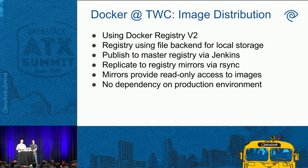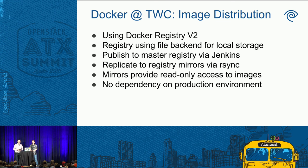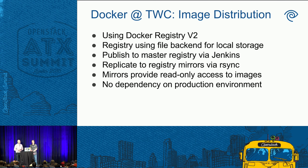One potentially controversial decision: we didn't want any dependency on our production environment being functional in order to pull images. It was initially attractive to back-end our Docker registry into Swift, but we thought about scenarios like deploying a broken Keystone build — would the Docker registry still be able to authenticate to Swift to pull the corrective image? We decided that would be a stressful situation, so we stuck with local file storage.